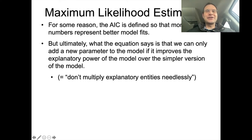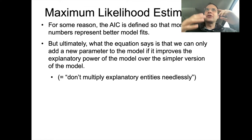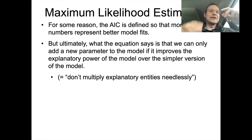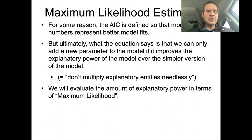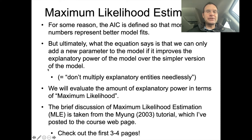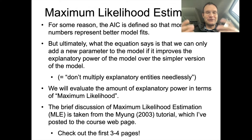Occam's razor still applies — we don't want to multiply explanatory entities needlessly. So anytime we add a parameter or explanatory variable to the model, we get a penalty, and then we have to evaluate how much explanatory power we get out of it. That we will do with maximum likelihood estimation. There's a reading on this if you want to get somebody else's view on this besides mine.